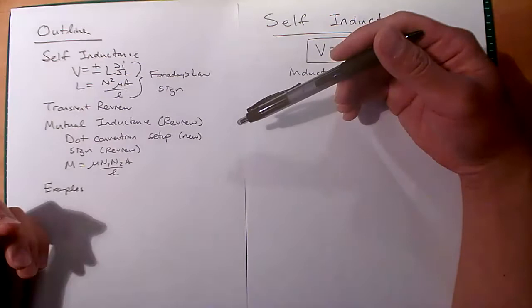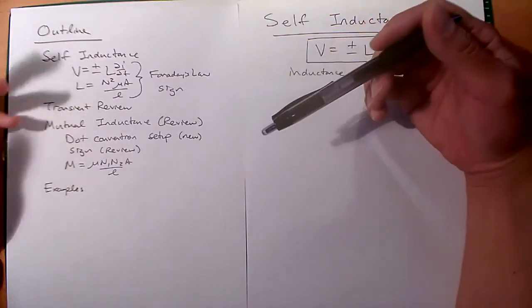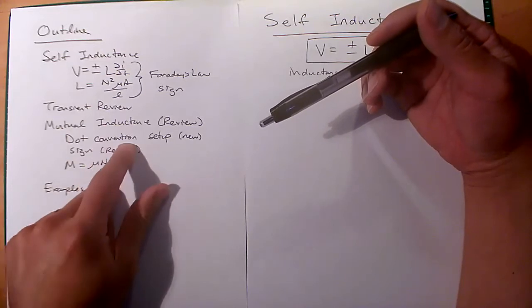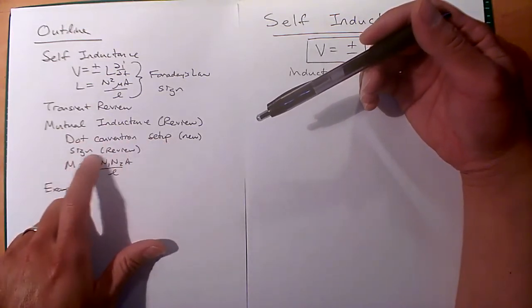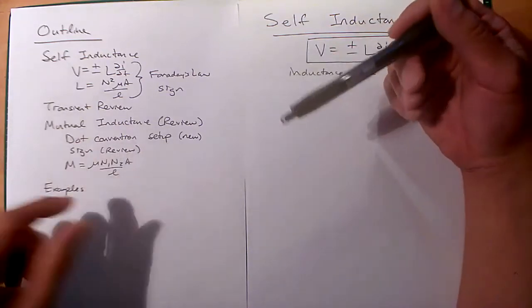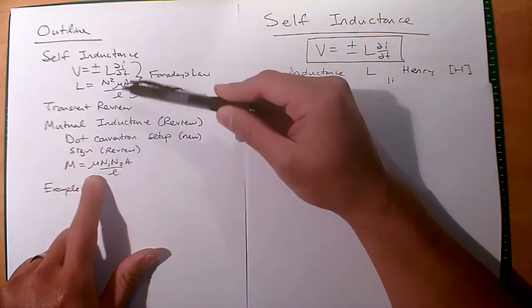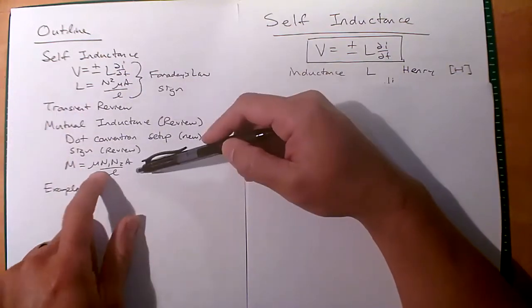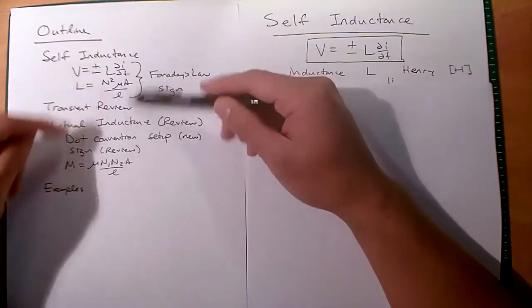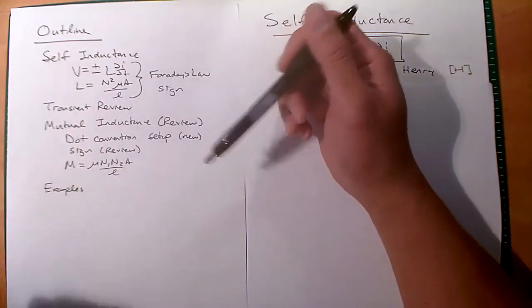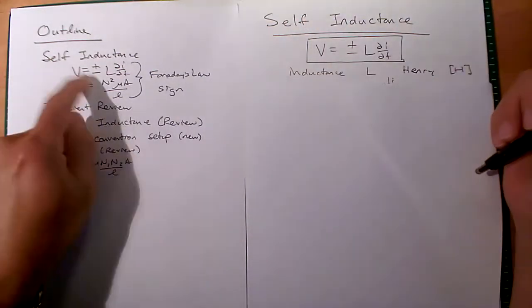Faraday's law is going to come into the picture. You've seen some of this before with the dot convention. Something new is we're going to show how to set up the dot convention, and then review the sign. We'll look at the similarity between mutual inductance and self-inductance — it's dependent on mu as well, N1 and N2, A over L. So it's a very similar relationship. And then we'll do some examples to bring it home.